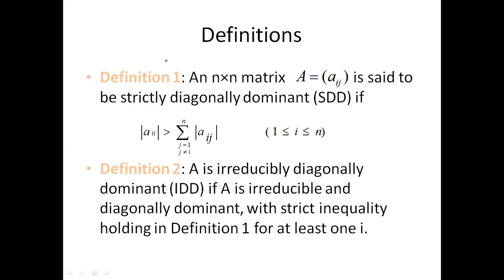Let's start with the definition. An n by n matrix A is said to be strictly diagonally dominant (SDD) if the absolute value of the diagonal elements is greater than the sum of all off-diagonal elements in each row.